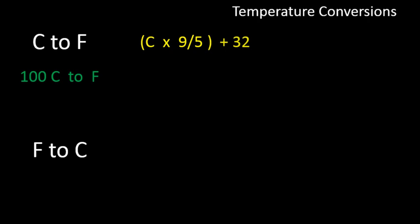If we're going to convert 100 Celsius, it's going to be 100 times 9 over 5, and then add 32, and we end up with 212 degrees Fahrenheit. And if you recall from the previous slide, both of those are the boiling points for both Celsius and Fahrenheit.